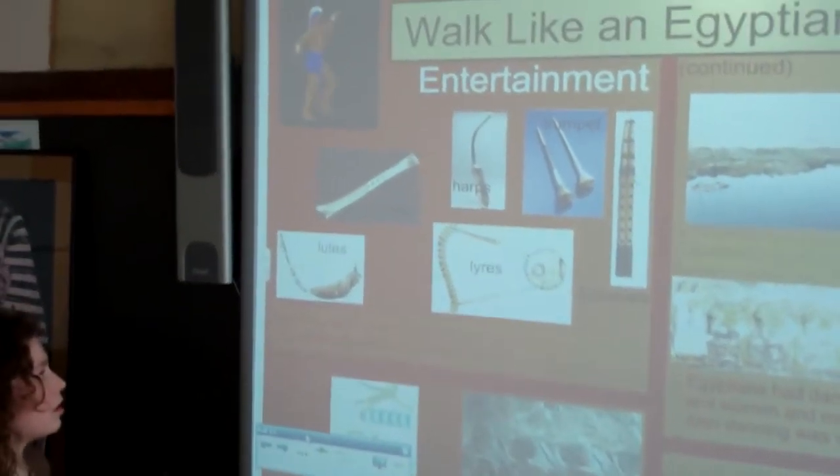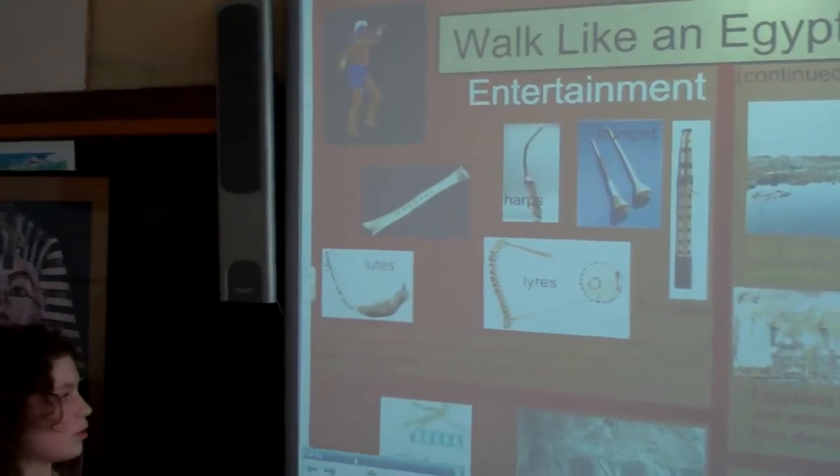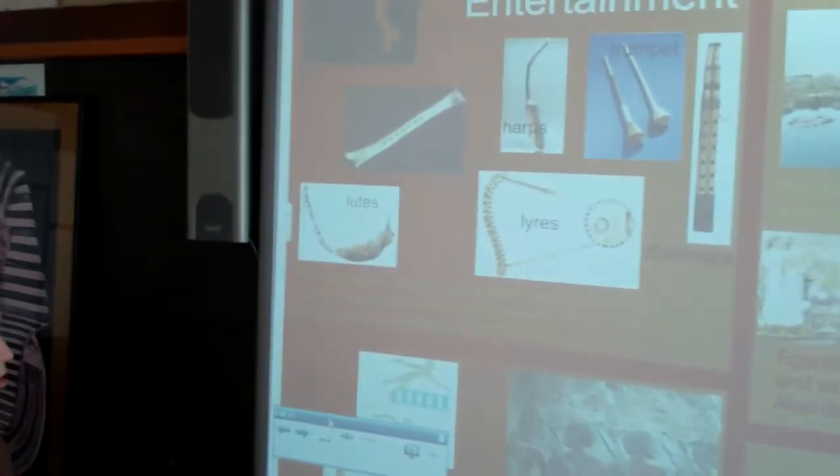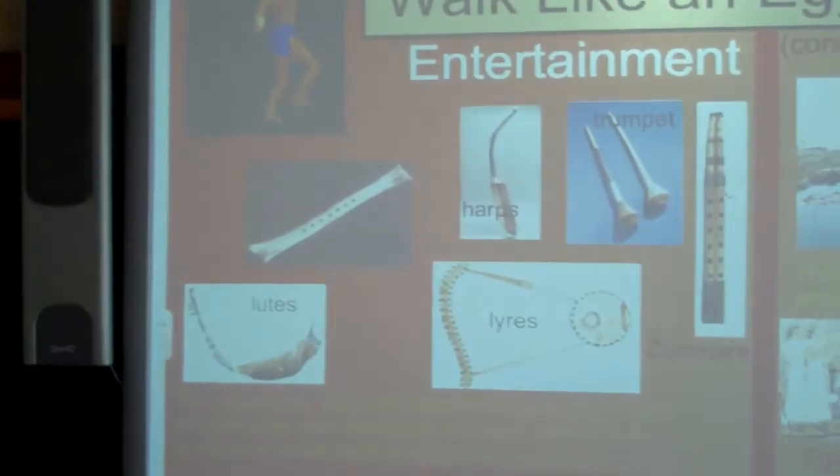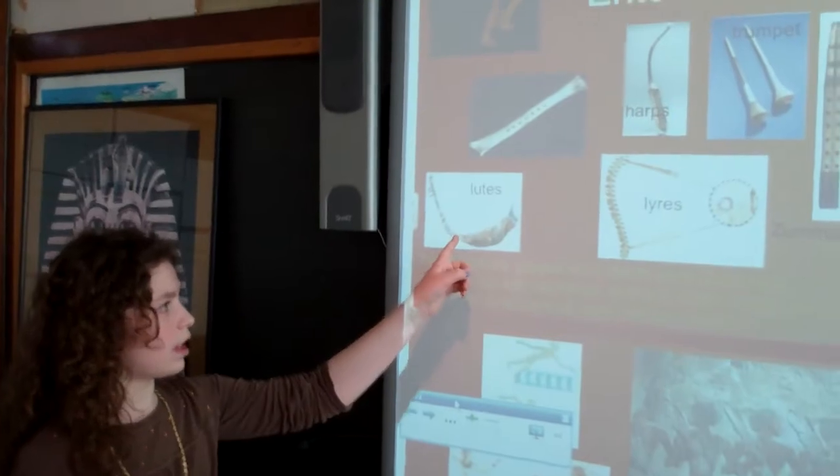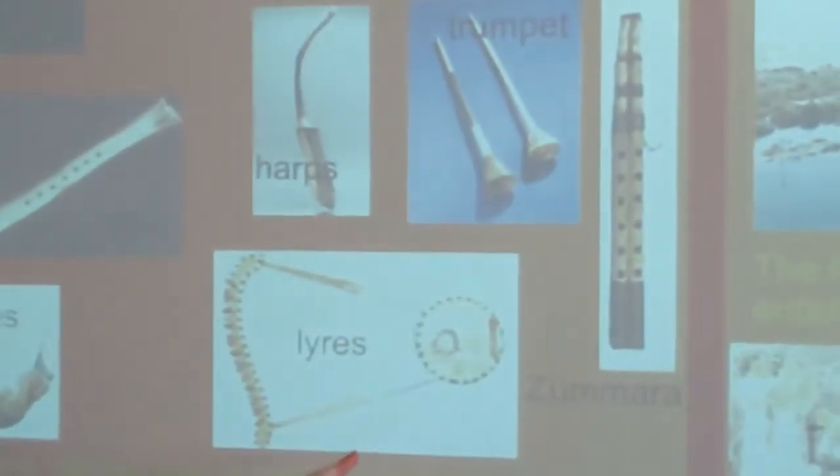Egyptian entertainment. The Egyptians played instruments such as a zoomera, which is a double pipe flute with reed, flute, trumpet, harps, lutes, which is like a guitar, and lyras, which is a vertical harp with two arms. This is a flute made out of a ball, lutes, harps, trumpets, and a zoomera.